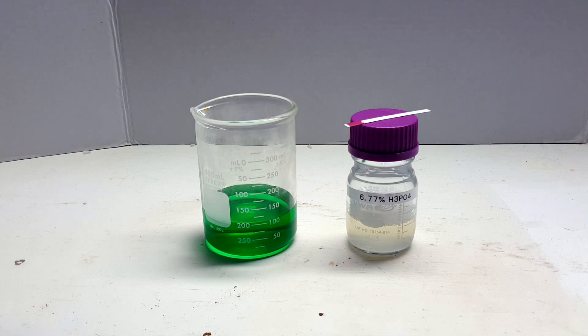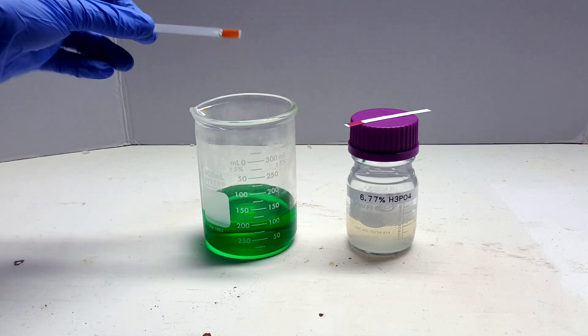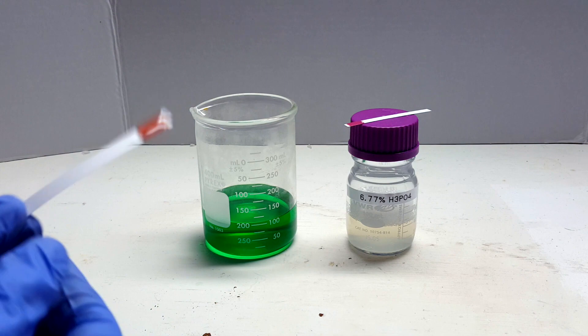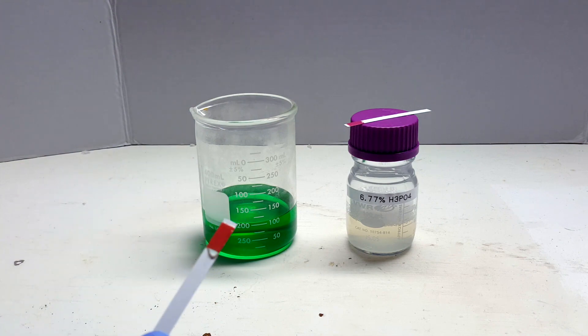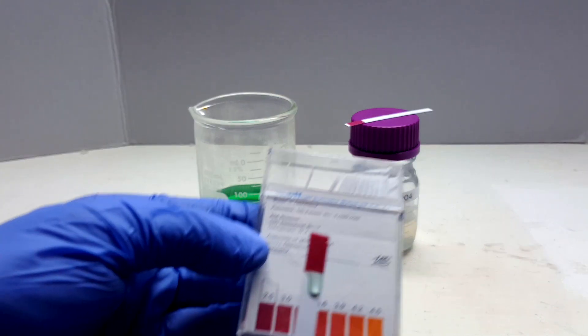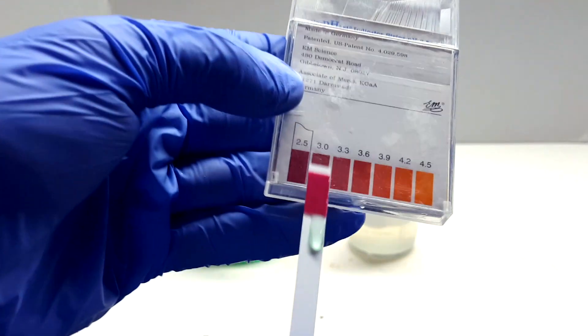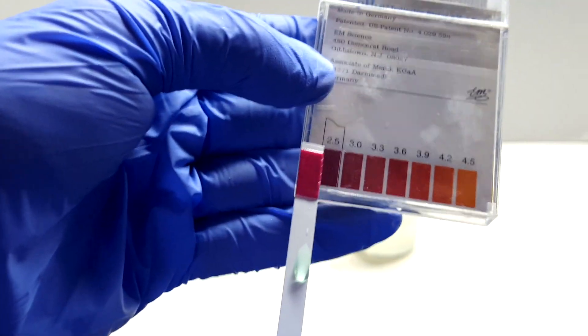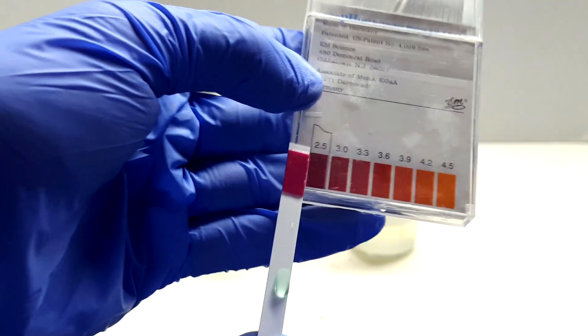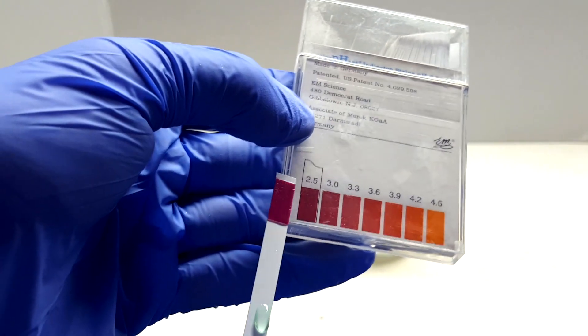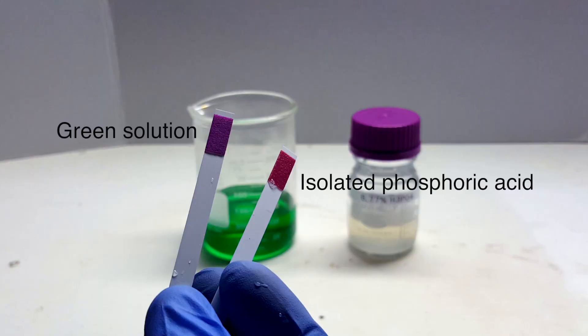I saved the green solution left in the distilling flask from the last run and let it evaporate down some. Testing with acid-specific pH paper, the green solution is actually more acidic than the paper can measure. This means there's still plenty of phosphoric acid left to be extracted. In fact, the acid actually isolated was less acidic, judging by the color of the paper, than the remaining green solution.